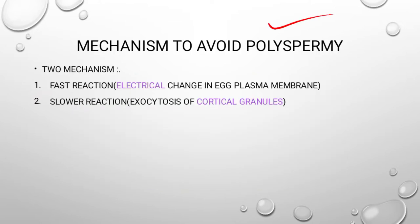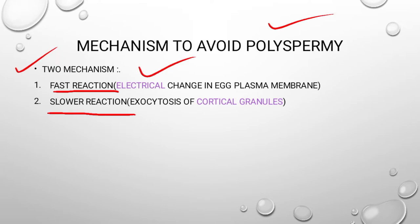What is the mechanism to avoid polyspermy? That is a very important topic. There are two mechanisms by which we can avoid polyspermy. First is the fast reaction and the second is the slow reaction. The fast reaction is done by the electrical change in the egg plasma membrane, and the slow reaction occurs by the exocytosis of the cortical granules.